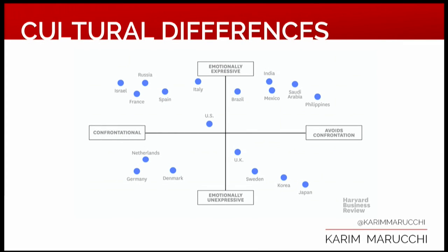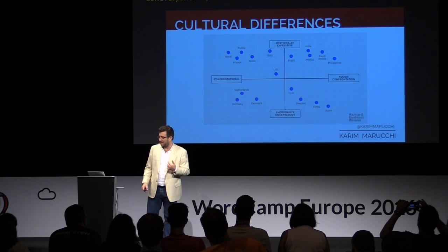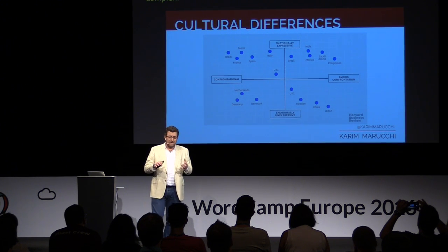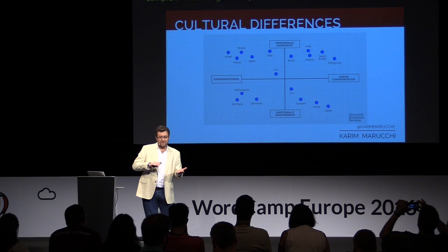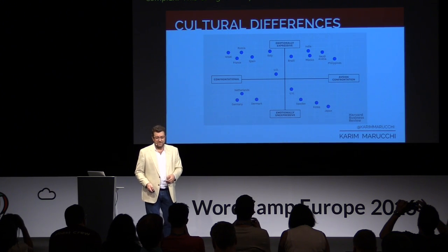Here's a very simple graphic that very quickly gives you an incredible idea of where some of these national cultures may land. You might be from one of these places, you might agree or disagree, but this comes from Harvard Business Review, not me. Very quickly, you can see some are confrontational, some avoid being confrontive. Some are very emotional, some are very matter-of-fact. This can get complex.